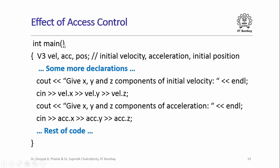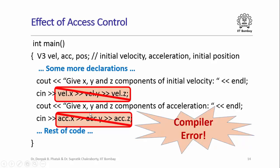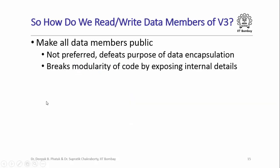When you declare a class and declare some data members as private, you can no longer access those data members directly when reading in values or accessing them for any other purpose. If you write code that does so you will get a compiler error saying you cannot access these private data members of the object velocity of class V3. So if the data members of V3 have been declared private, how are we going to read or write them? One option could be to make all data members public, but this is certainly not preferred because it defeats the very purpose of data encapsulation and breaks the modularity of code by exposing internal details of class definitions to the program.